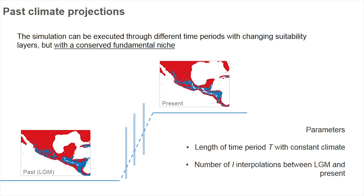If we have climatic layers from the past, for example from the Last Glacial Maximum, we can generate interpolations between past and present and create suitability layers for all those periods. The simulation can then be executed through these different time periods where suitability changes but the fundamental niche is conserved — representing our other assumptions. Parameters such as the length of the time period and the number of interpolations between past and present can also be defined.